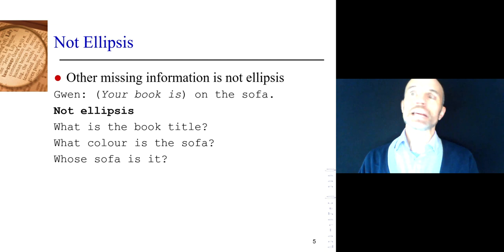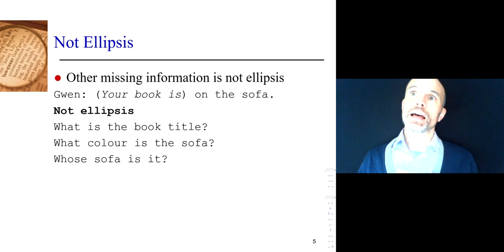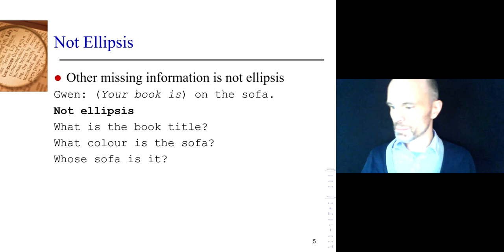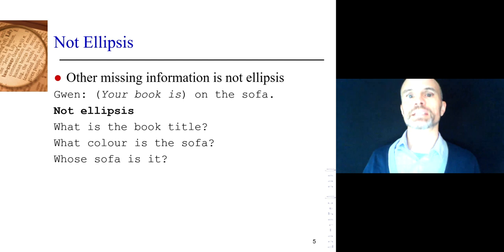Yes, you could add more — 'your old book is on the green sofa' — but you don't need words like 'old' and 'green.' The study of ellipsis is about figuring out which grammatical elements are missing and how we find them from the context or the co-text.